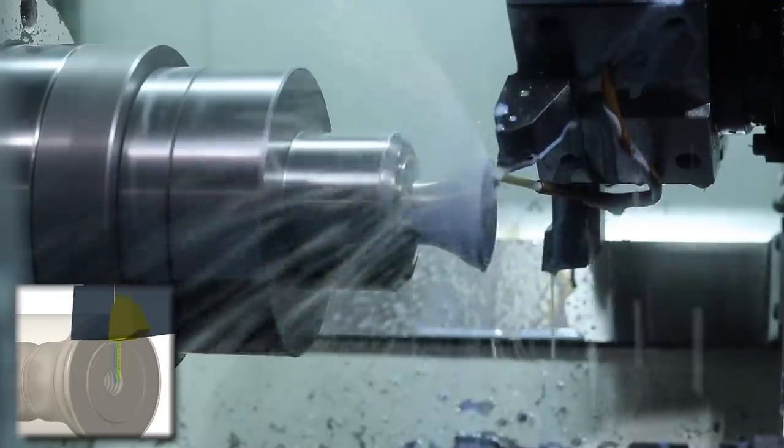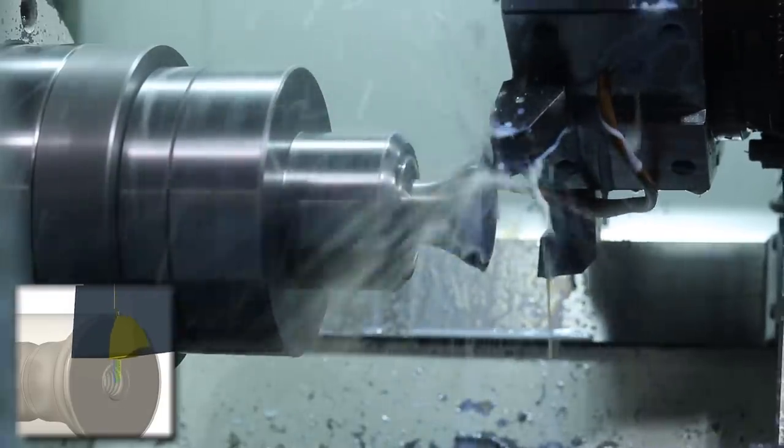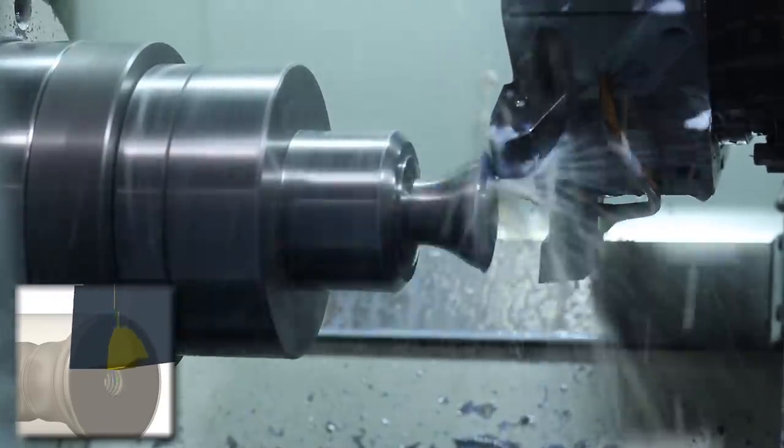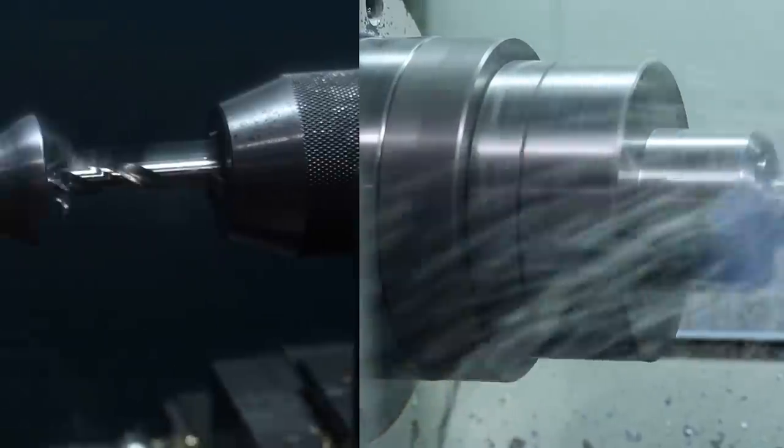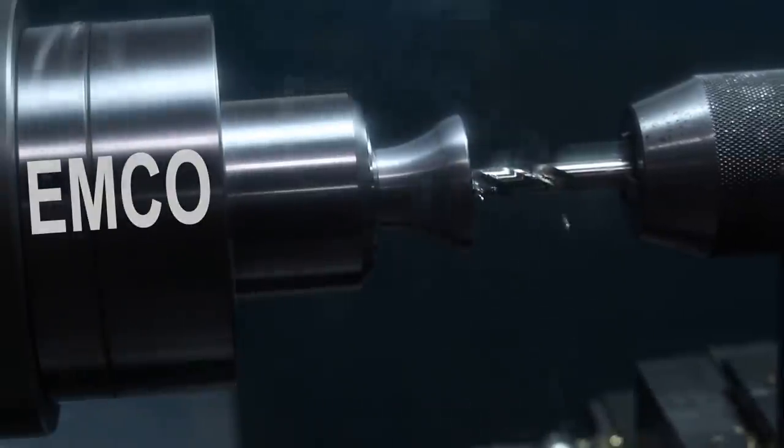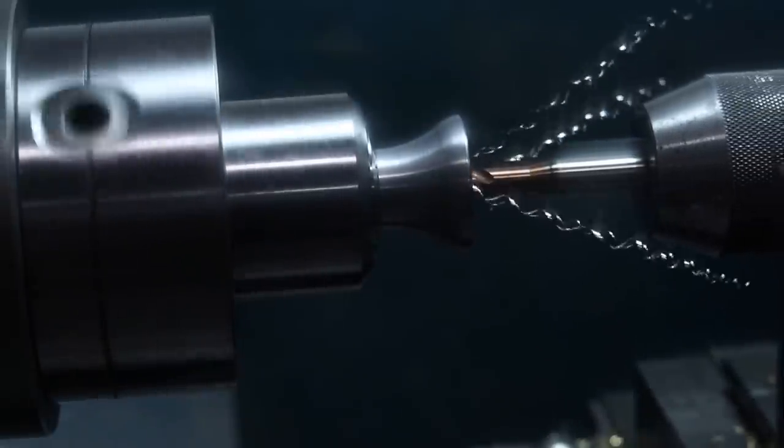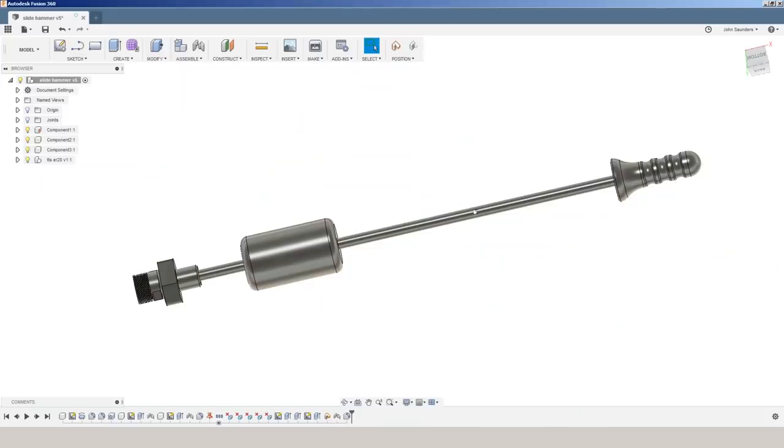Switching from a four jaw over to a 5C, that lets us easily hold this part to do our backside work, doing a roughing profile, then drilling and tapping. What I like about this slide hammer is we made the design modular so we can easily swap out a rod or a piece of all thread for a different length. Because sometimes you want that stroke, but sometimes you need something that's smaller or shorter to get into a tight spot.